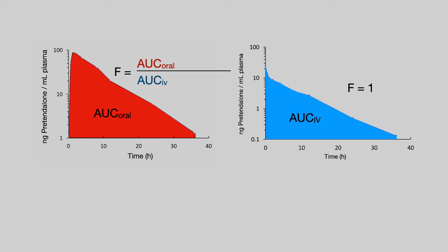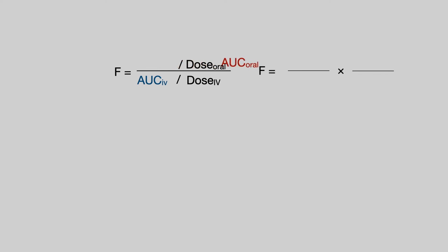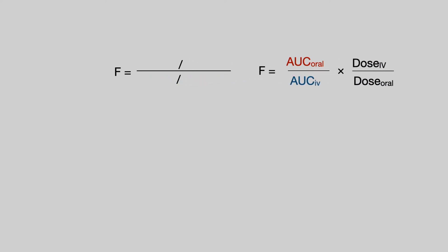It's that simple, but there is a little wrinkle. The oral dose was 50 mg and the intravenous dose was 2 mg, so we do have to normalise for doses. We simply divide the oral AUC by the oral dose and the intravenous AUC by the intravenous dose. That gives us F, the absolute oral bioavailability, and the usual equation is rearranged from this — and that is the standard equation for calculating F.